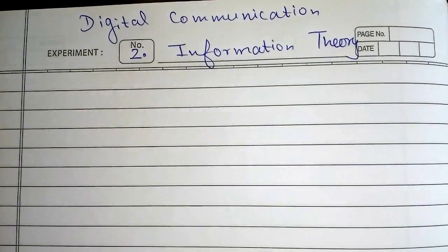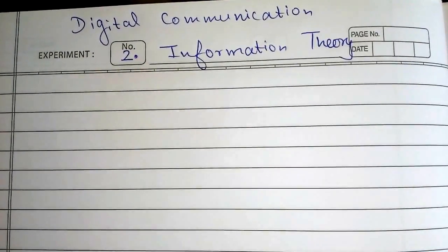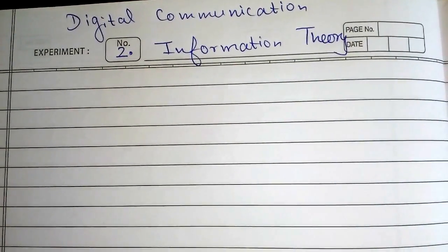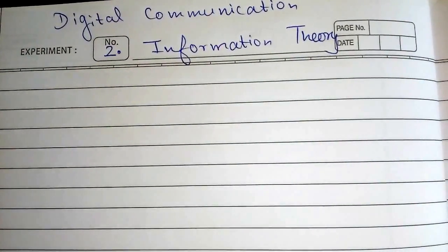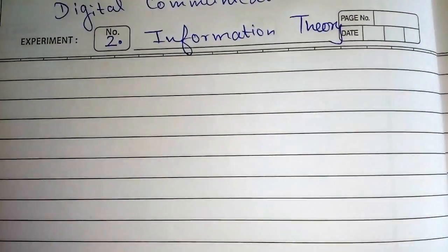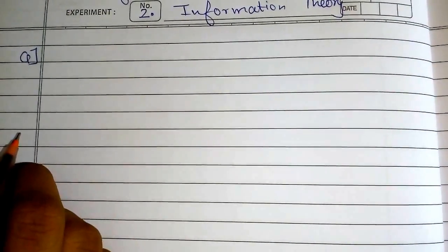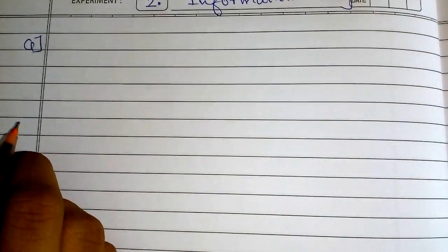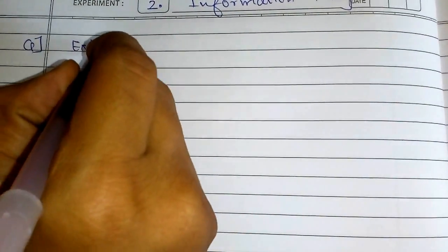Hello guys, this is a short video series on solving numericals of digital communication. The first chapter we are going to see is information theory. Consider this question: consider an extremely noisy channel having a bandwidth of 1 kilohertz. What would be the channel capacity? It is given that it is an extremely noisy channel.